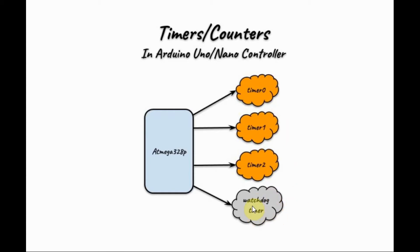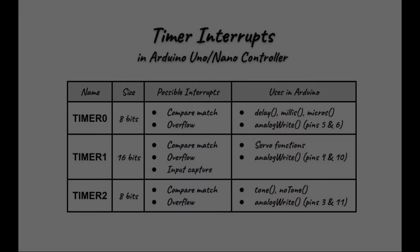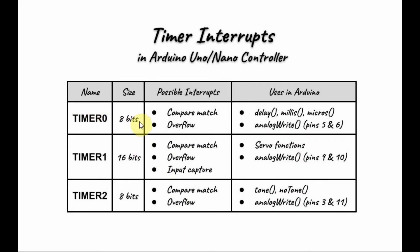The watchdog timer is used to reset the microcontroller when the code goes into an infinite loop. Timer 0 has a size of 8 bits, and it generates two interrupts: compare match and overflow interrupts. Built-in functions that use Timer 0 include delay, millis, micros, and analogWrite for pins 5 and 6.